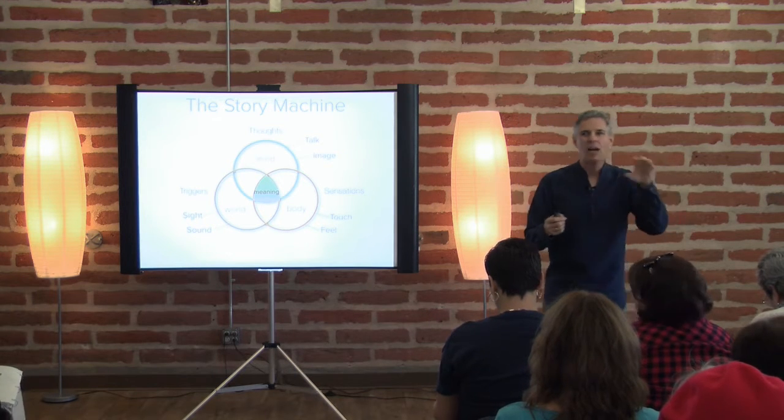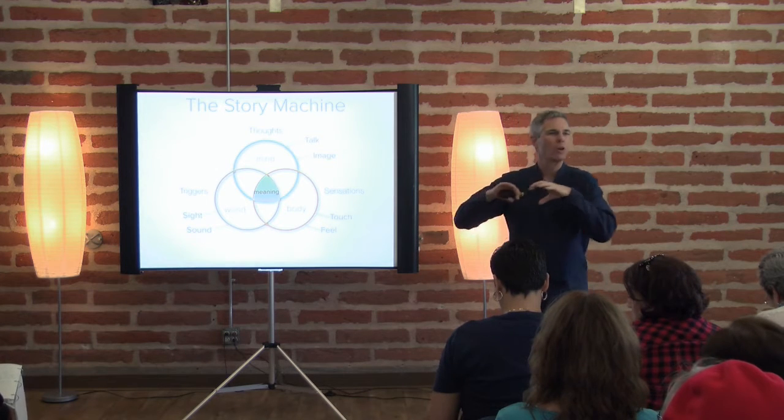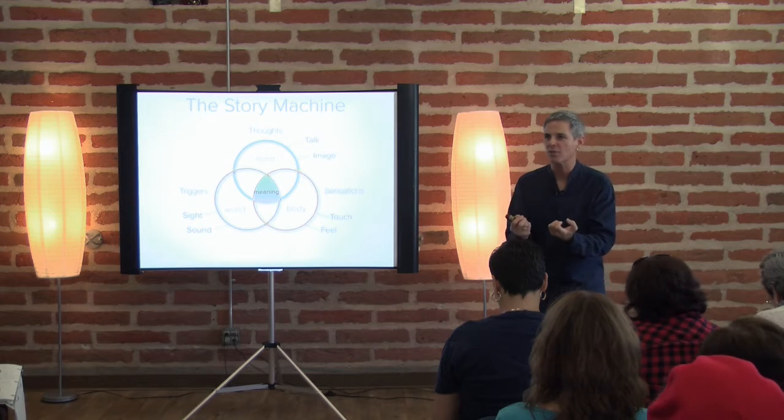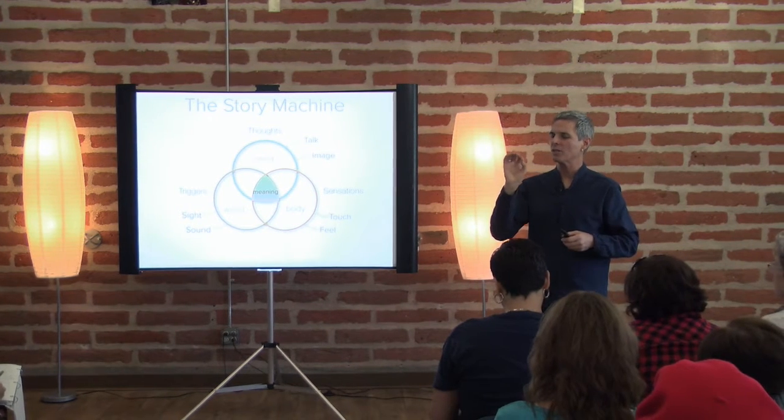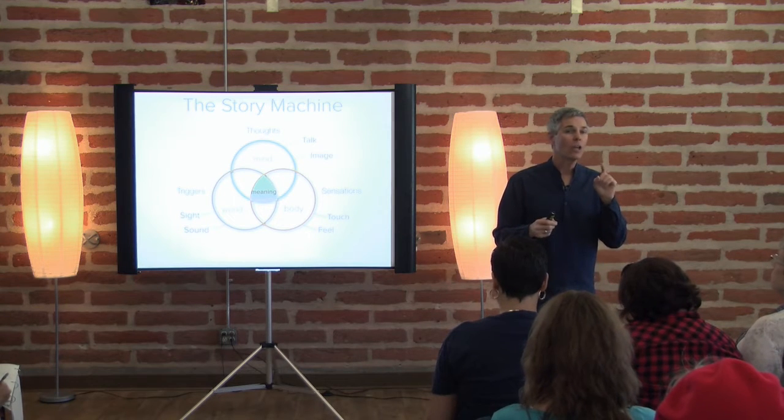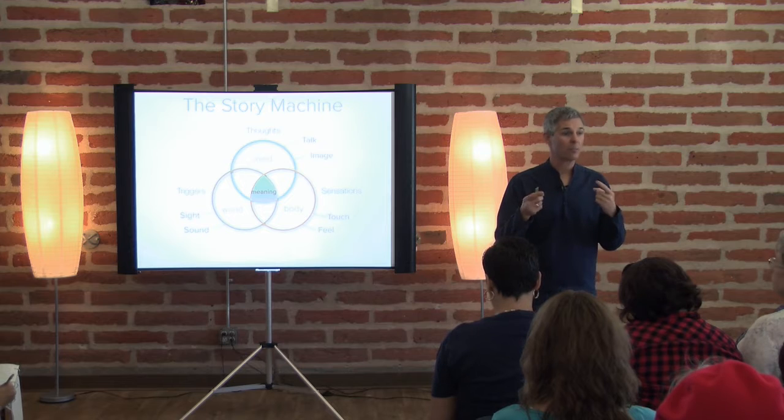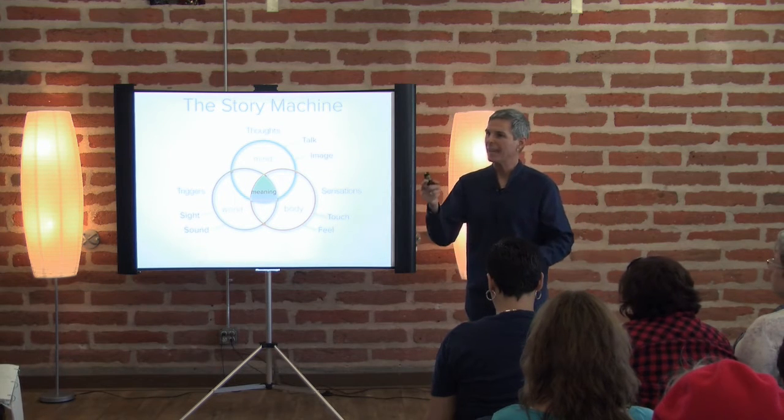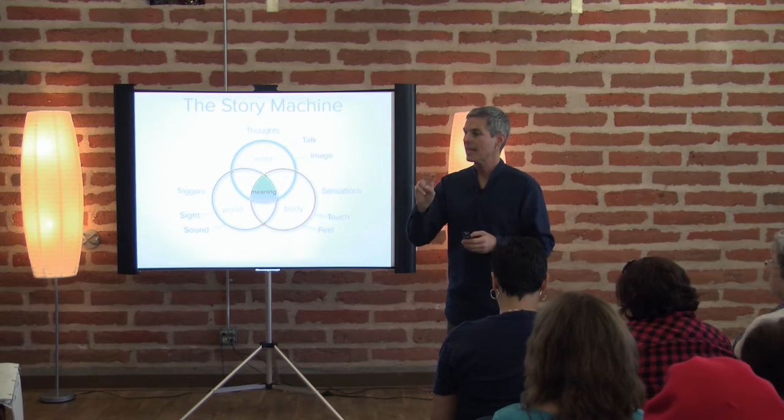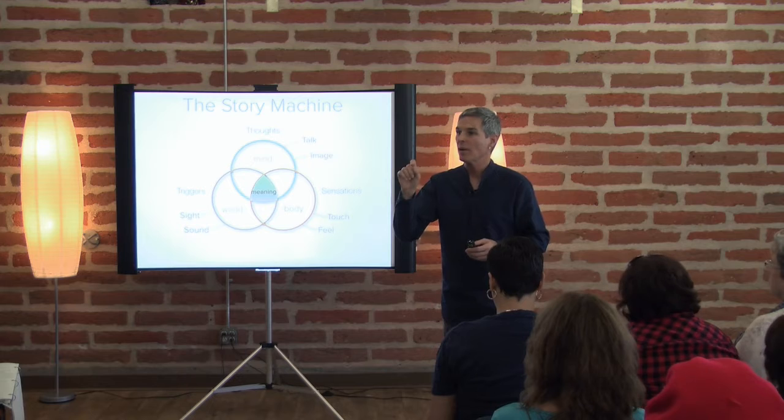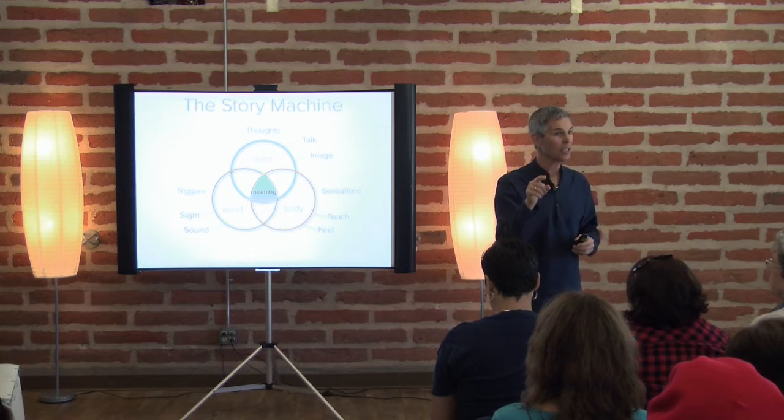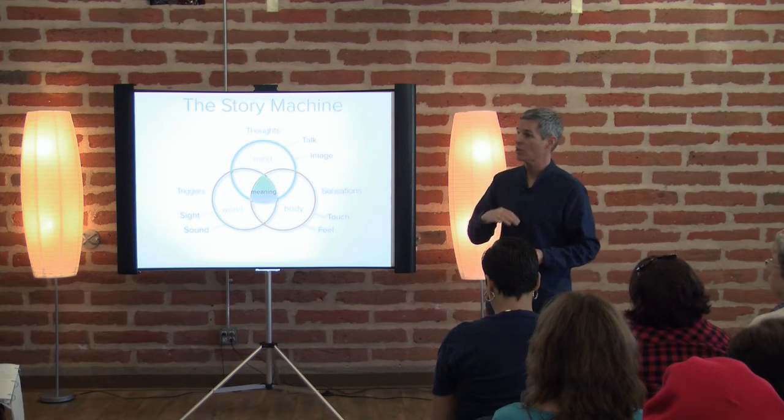And so, notice that I've given six words to the fullness of what happens inside of ourselves. Sight, sound, talk, image, touch, feel. If you put all of that together, that makes the fullness of your experience. There was a psychologist, his name was William James, and he said, if you have a word for something, you'll be able to engage with it. And that's why in this program, I'm giving you six words: sight, sound, talk, image, touch, feel. That will enable you to be able to monitor where your attention is.